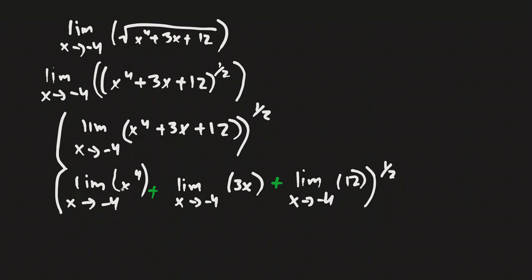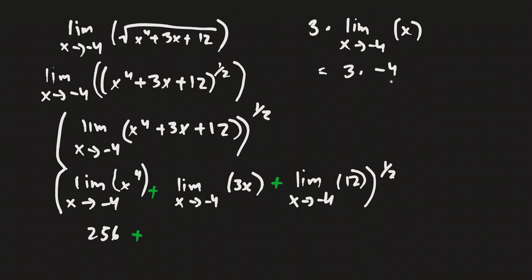Next we can solve using the limit laws. This is just going to become negative 4 to the fourth power, which using my calculator gives me 256. And for the 3x term, we bring the 3 out front, so that's 3 times the limit as x approaches negative 4 of x, which equals 3 times negative 4, giving us negative 12.